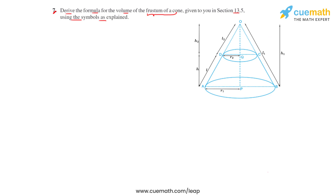Question number 7 asks us to derive the formula for the volume of the frustum of a cone given to us in section 13.5, using the symbols as explained. We will be drawing the figure first as seen here.